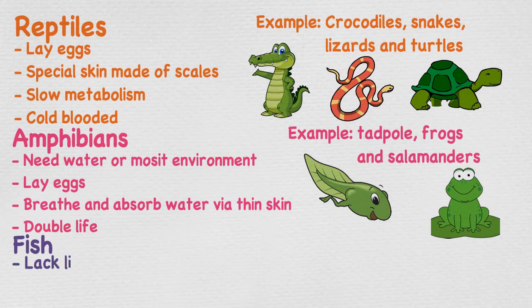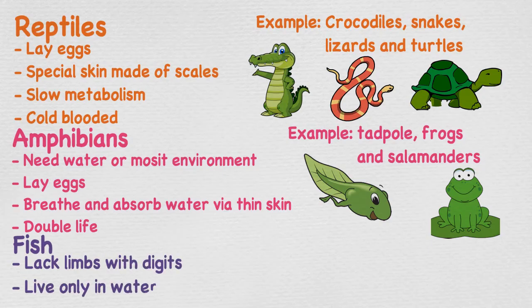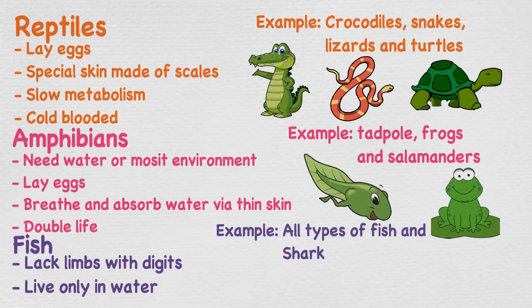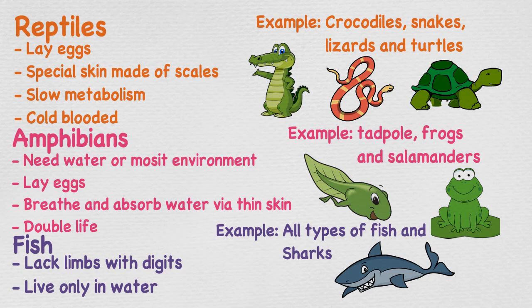Fish are gill-bearing aquatic animals that lack limbs with digits. The combination of gills, fins, and the fact that they can only live in water make fish different from all other animals. Fish spend all of their lives in water, are cold-blooded, and also lay many eggs. Examples include sharks and various fish such as salmon.